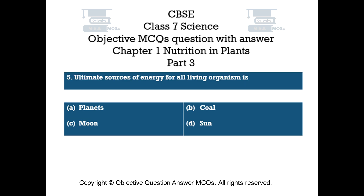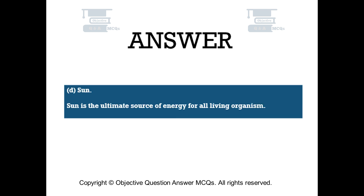Question number 5. The ultimate source of energy for all living organisms is. Option A: Plants. Option B: Coal. Option C: Moon. Option D: Sun. The right answer is option D: Sun. The Sun is the ultimate source of energy for all living organisms.